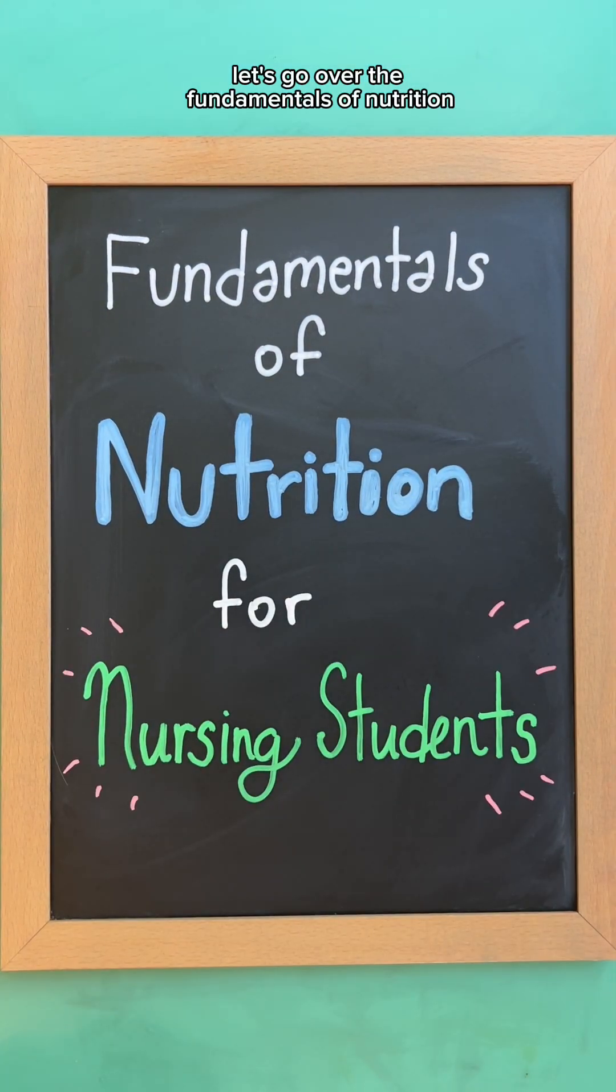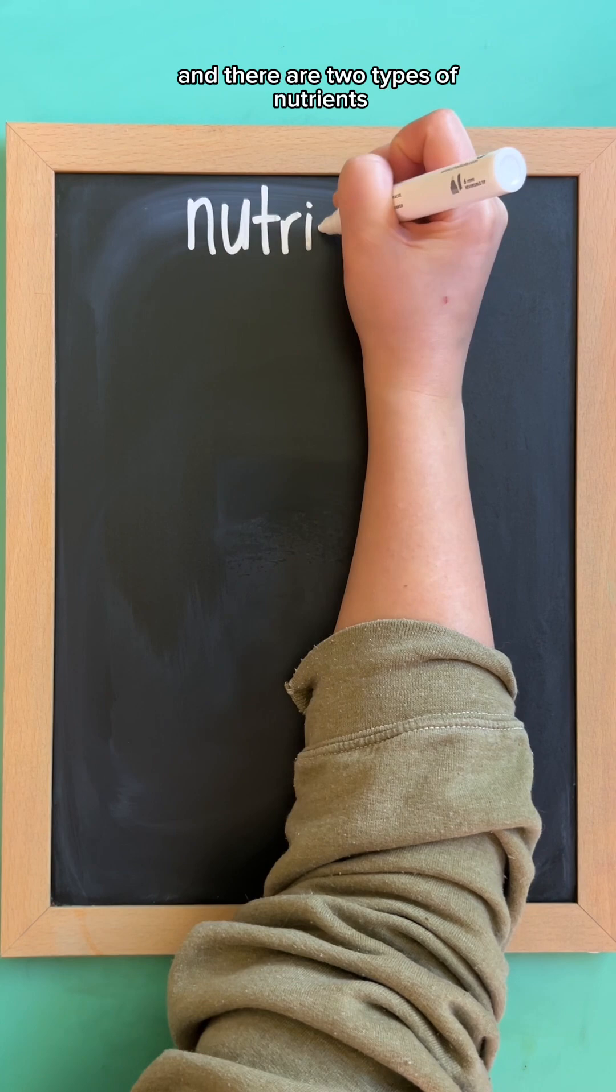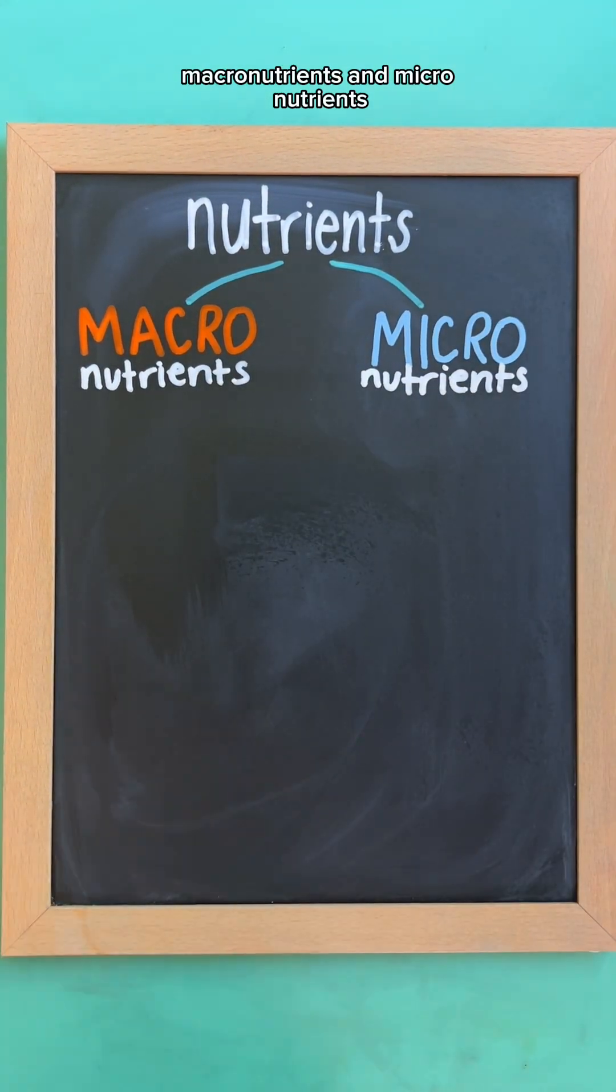Let's go over the fundamentals of nutrition. A nutrient is a substance that provides nourishment essential for life, and there are two types of nutrients: macronutrients and micronutrients.